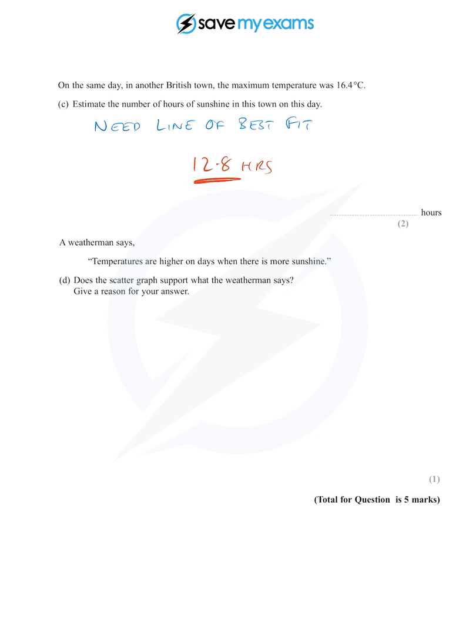A weatherman says temperatures are higher on days when there is more sunshine. I see why he became a weatherman, very clever chap. Does the scatter graph support what the weatherman says? Well, yes, it does.